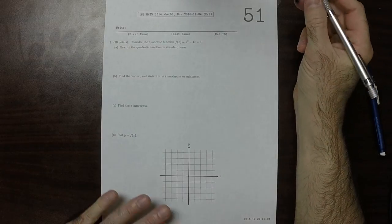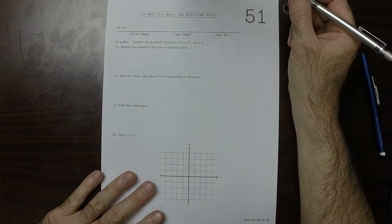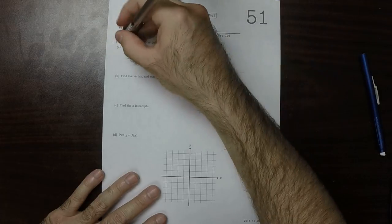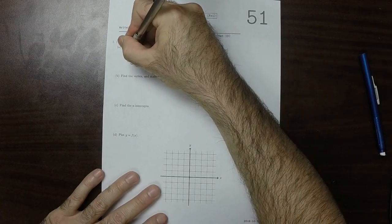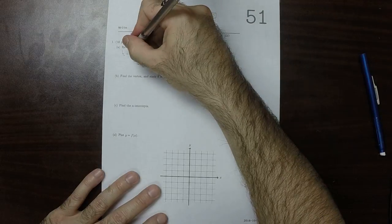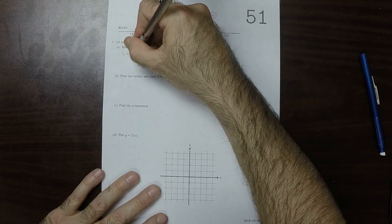This is the solution to written homework 51. The vertex formula for the horizontal coordinate of the vertex is negative B over 2A.